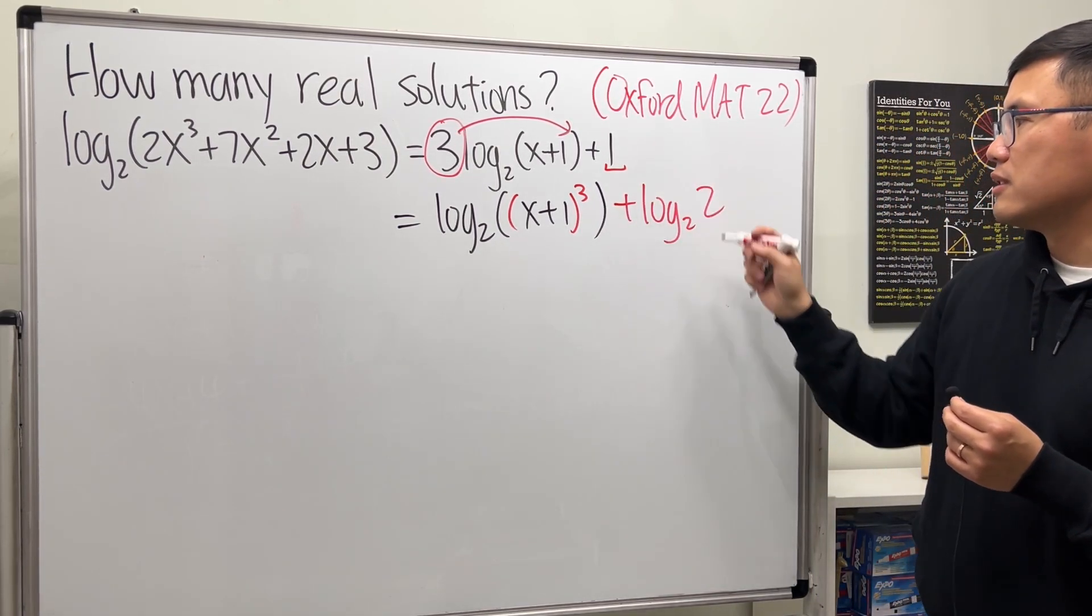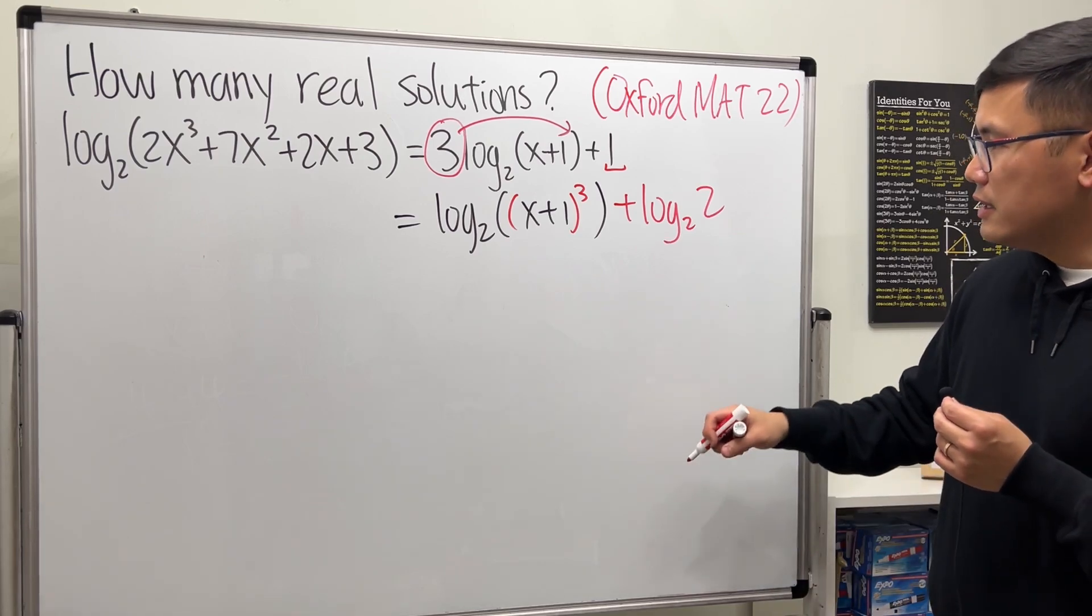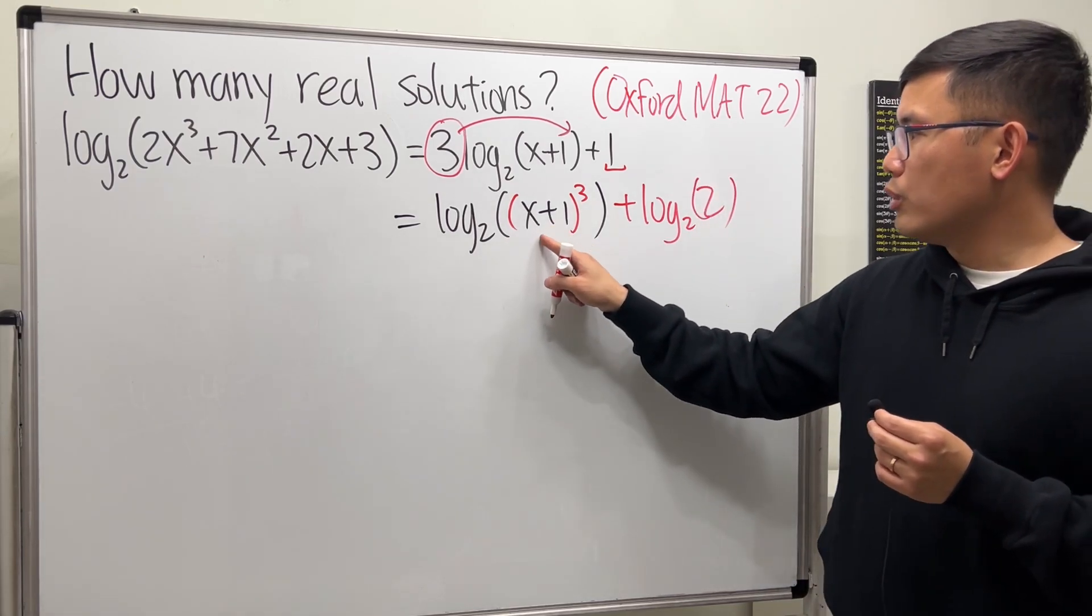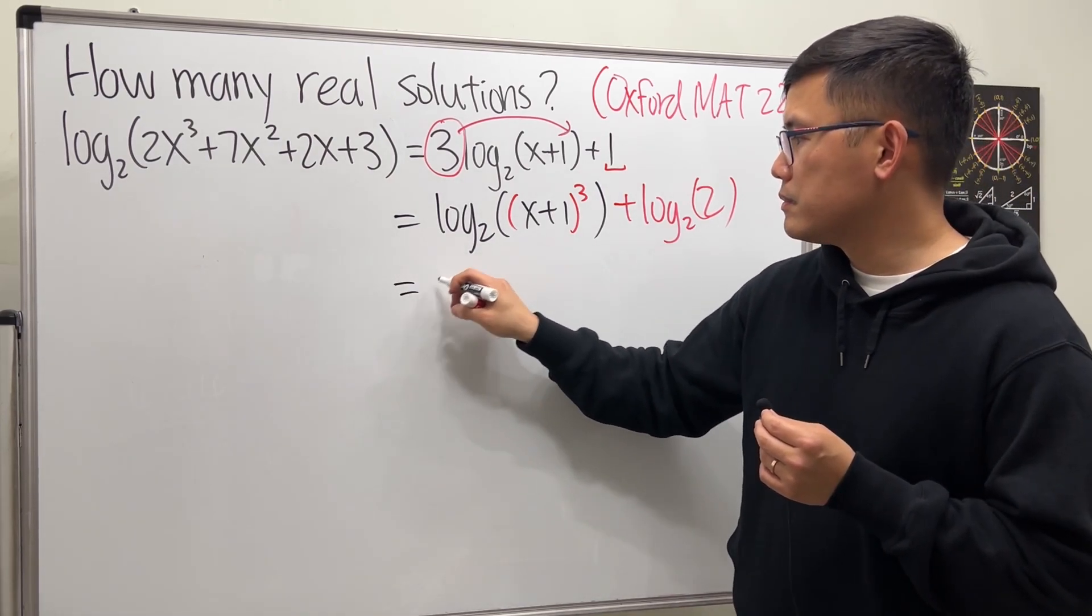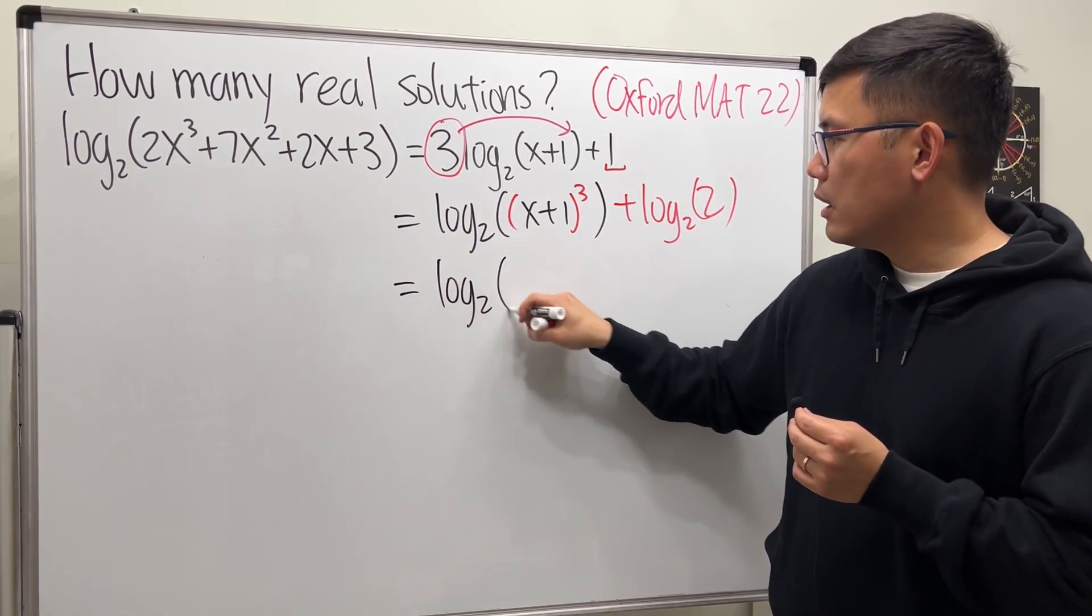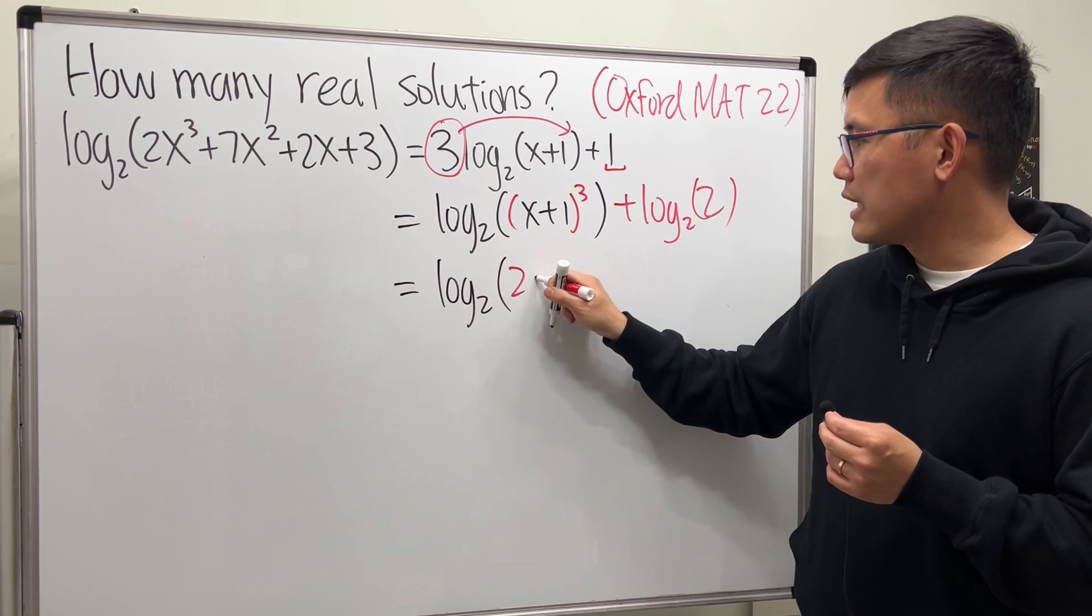So let's purposely write the one as log base 2 of 2. This way we can just multiply the insides and then put them inside of just one log base 2, so log base 2 of 2 times that.